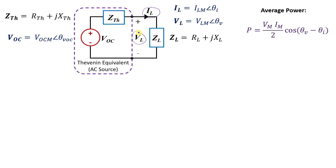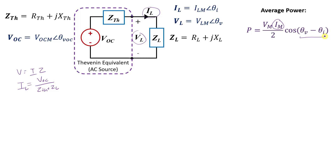Let's start with the current. This current is defined by Ohm's law: V equals I·Z in AC. So if we want I_L, we know we need the phasor V_OC divided by Z_TH plus Z_L. Looking back at our power equation, we actually just want the magnitude value. There's going to be a trick where we find the phase difference in a different way, so we can just look for the magnitude of the current phasor through the load.